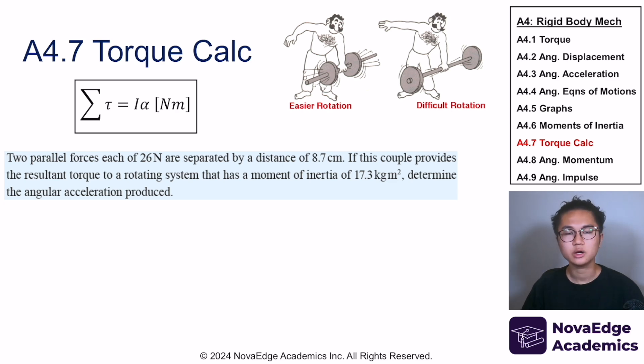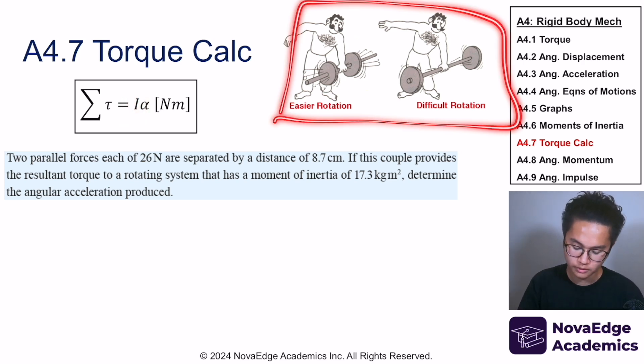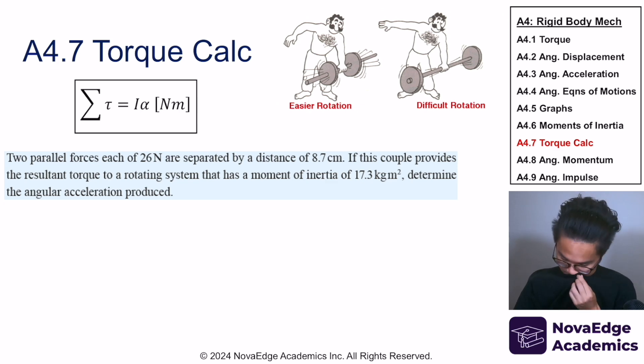Now, the reason why we care about moments of inertia is because we use it in torque calculation. The formula for the net torque is given by moments of inertia times by its acceleration. Why does moments of inertia matter in torque? Well, let's go back to what it was. I said that if the moment of inertia is higher, then it's difficult to rotate, meaning I need more torque to rotate. If it's easier to rotate, then I need less torque to rotate, which means that moments of inertia and torque is something that works in proportionality.